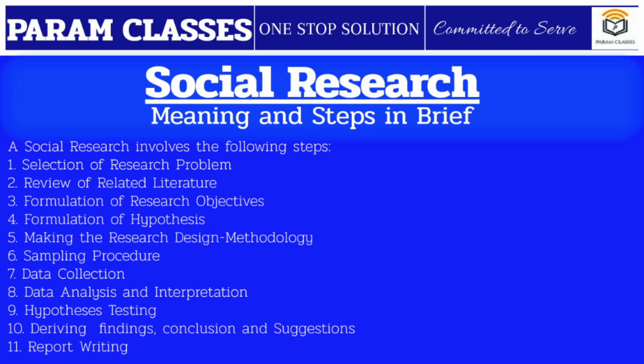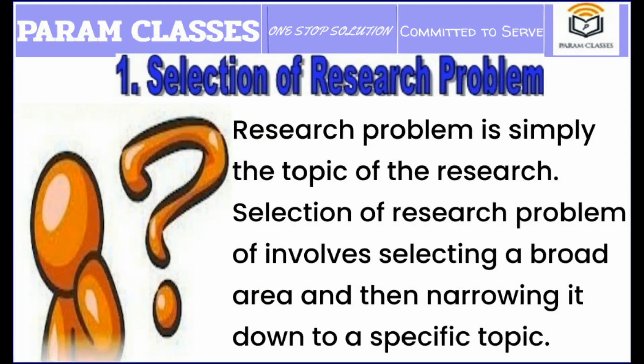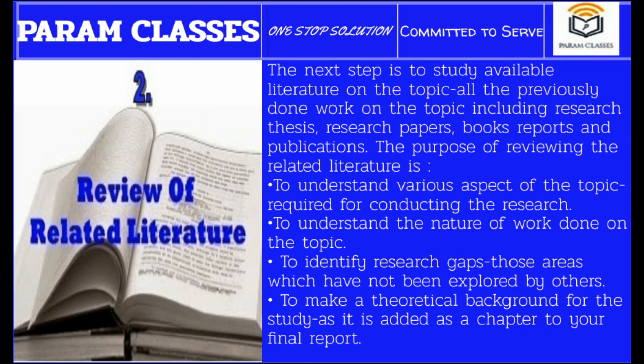Research is aimed at generating concepts, theories, and reliable explanations. A social research involves many steps. First of all, that is selection of research problem. A research problem is simply the topic of the research. Selection of research problem involves selecting a broad area and then narrowing it down to a specific topic.